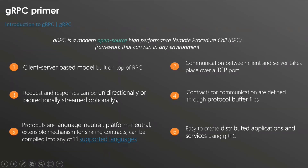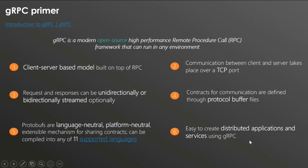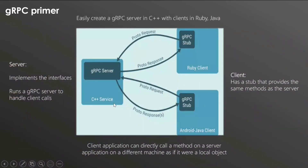The Microsoft Graph Connector Platform hosts the gRPC client and your line-of-business connector code hosts the server. The client makes calls to the server to get the data, communicating over a TCP port. You can stream unidirectionally and bidirectionally. What makes this framework language-neutral and platform-neutral is Protocol Buffers — ways to share contracts between two systems in a gRPC model — which helps easily create distributed applications and services.